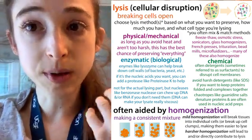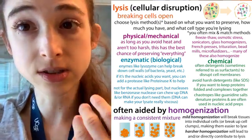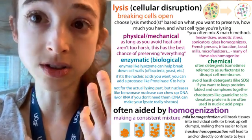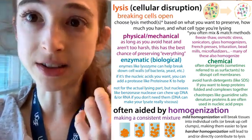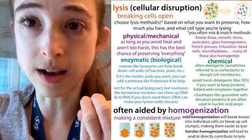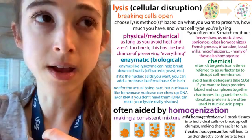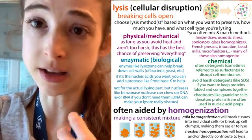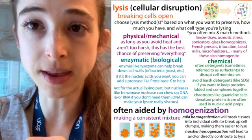It's going to be harder to break some cells open than others. For example, yeast and bacteria, because they have cell walls, are going to be harder to break open than mammalian cells. Our cells don't have cell walls, so we don't have to worry about that. For some types of cells they're going to be more difficult, and you might need to use harsher methods.